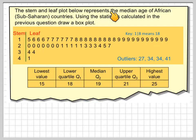The stem and leaf plot below represents the median age of African Sub-Saharan countries. Now in the previous video or previous question we calculated some statistics and I want you to use these to draw a box plot.